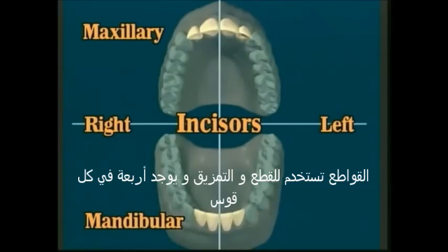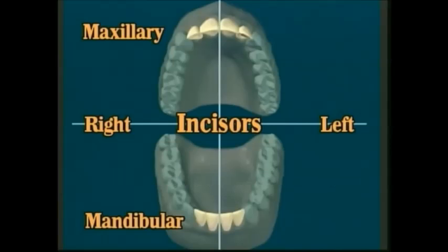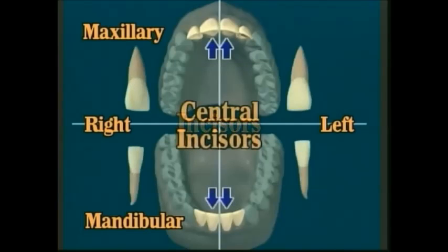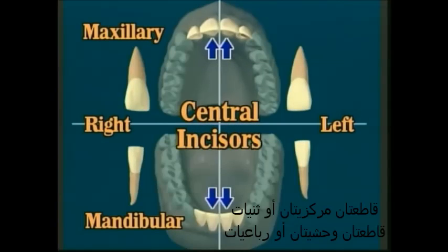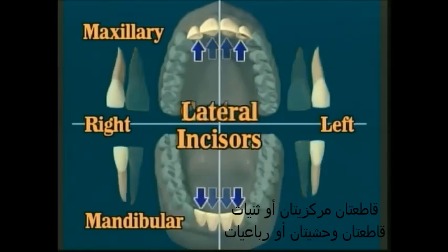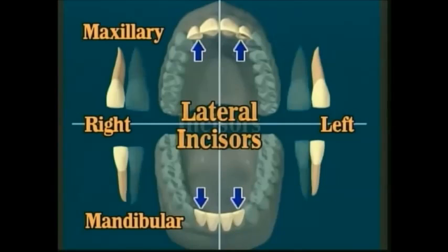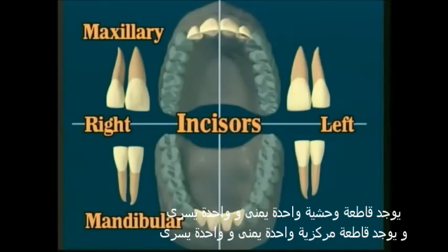The incisors are used for cutting or incising, and there are four in each arch: two central incisors and two lateral incisors. There is one right central and one right lateral incisor, and one left central and one left lateral incisor.